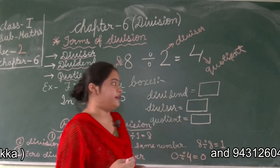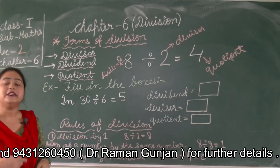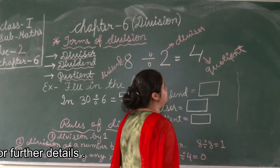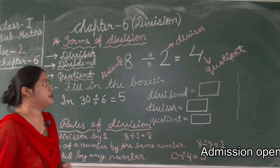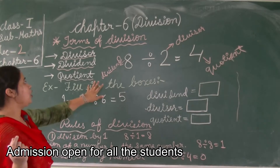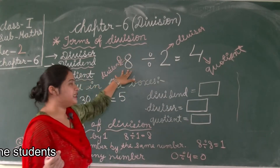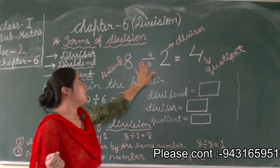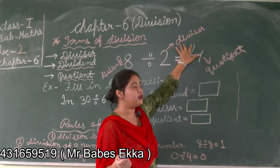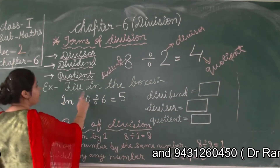The dividend means the number that is being divided. When we study the long division method in the next lectures it will be easier to understand. For now, just remember: 8 is being divided so 8 is the dividend; 2 is the number from which another number is divided so 2 is the divisor; and the result is the quotient.